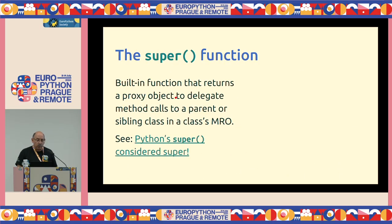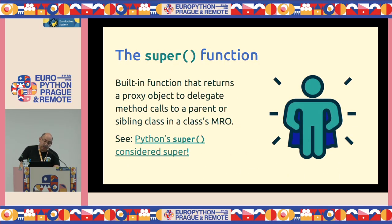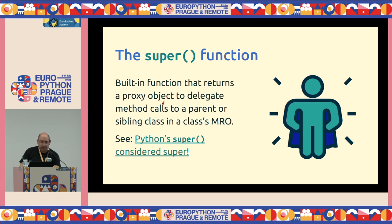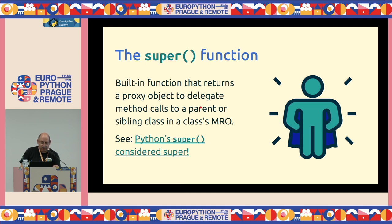Let's talk about the super() function. super() is a built-in that returns a proxy object delegating method calls to a parent or sibling class. A common misconception is that super always calls the superclass — not necessarily. It really calls the next method in line according to the method resolution order, which could be a sibling class. There's a great blog post called 'Python's super() considered super' with many more details.